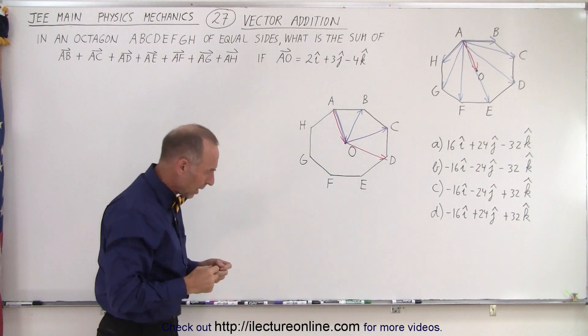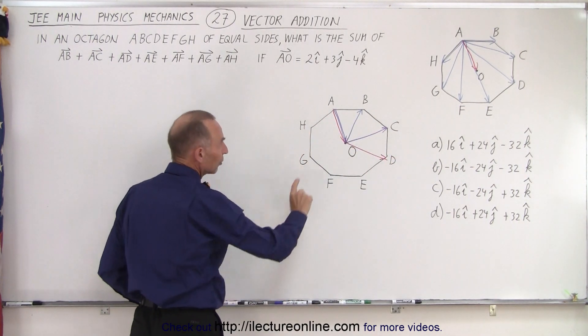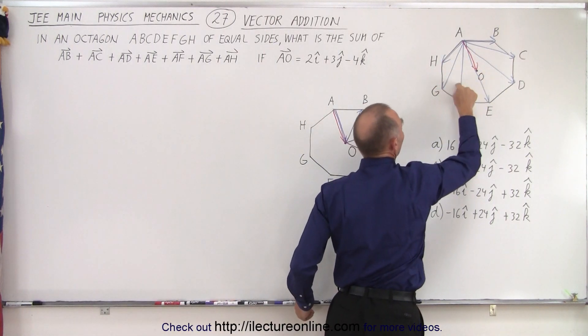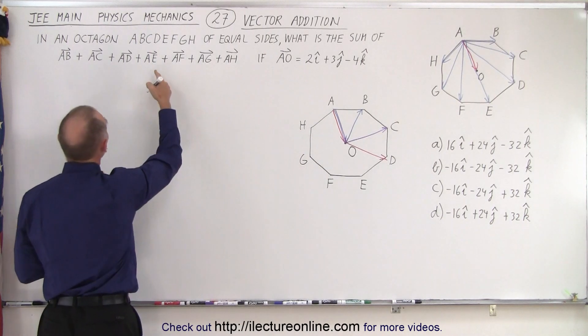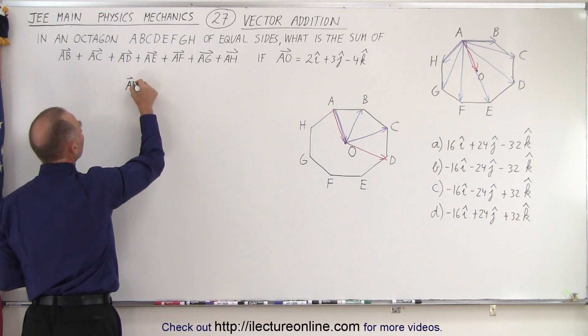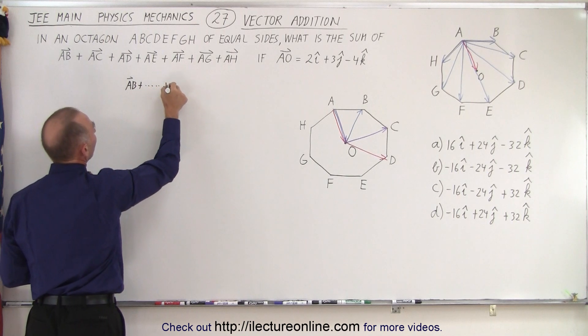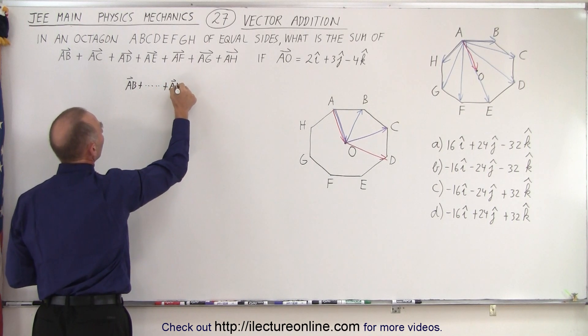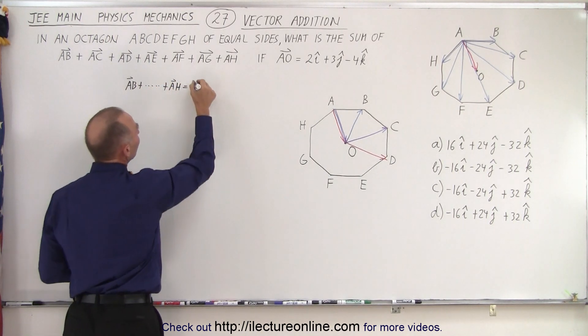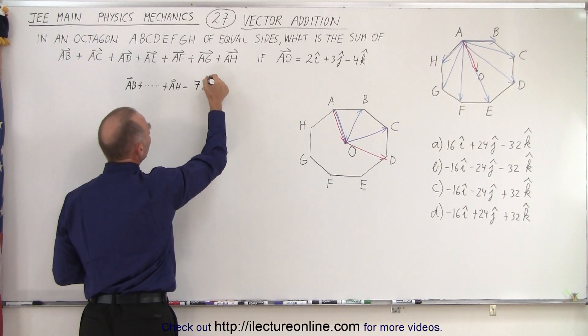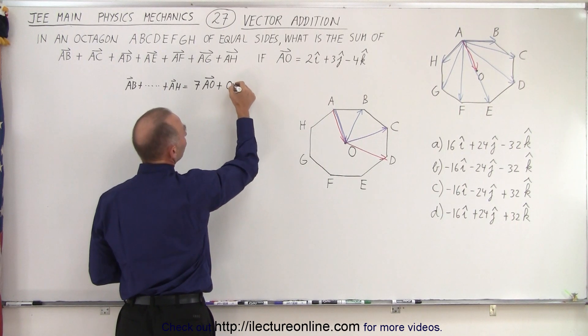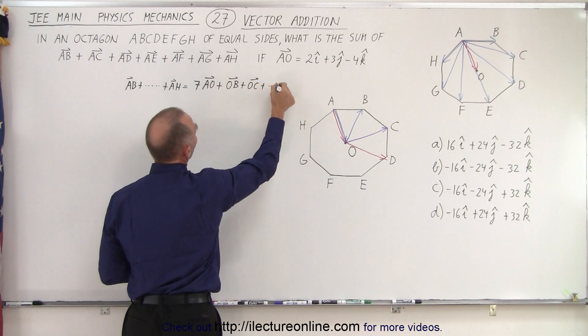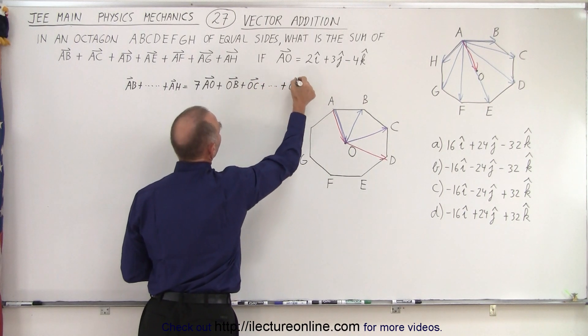And then you realize, okay, if I then add up all vectors, and know there's seven of them, one, two, three, four, five, six, seven of them, that means that this sum from A to B plus all the way to A to H, that is equal to seven times the vector from A to O, plus, then we have the vector from O to B, plus O to C, plus all the way to O to H.